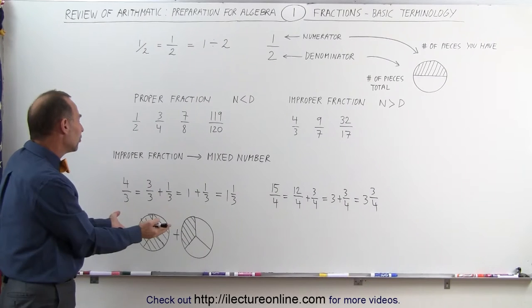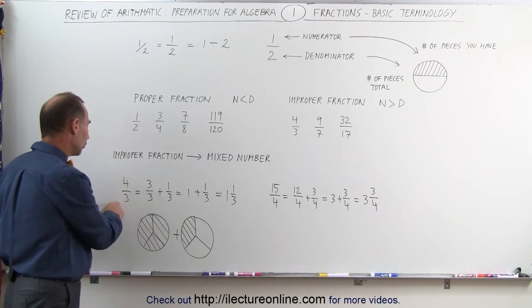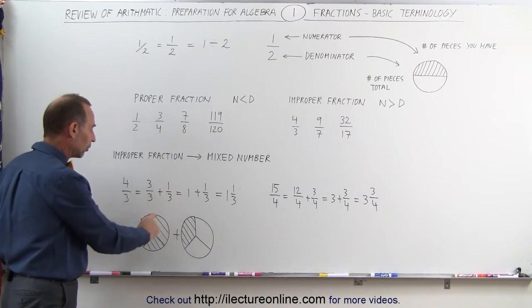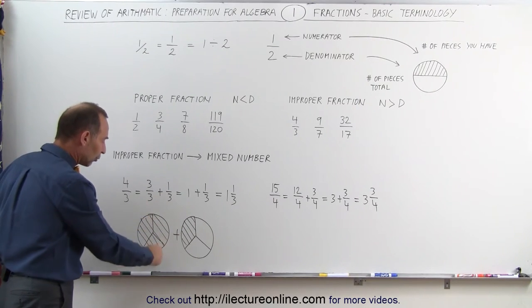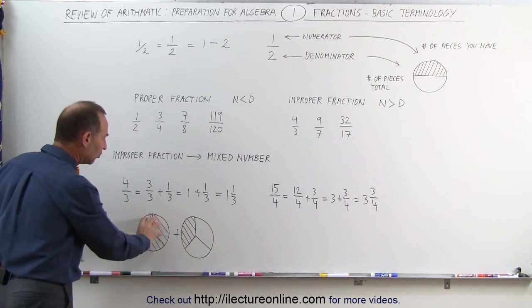If we want to visual represent what an improper fraction is, notice 4 thirds can be written as 3 thirds plus 1 third. Here you have a circle that's divided into 3 parts, and we have all 3 of these parts. We have the whole thing.